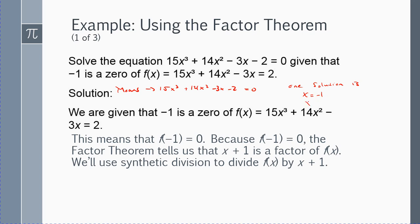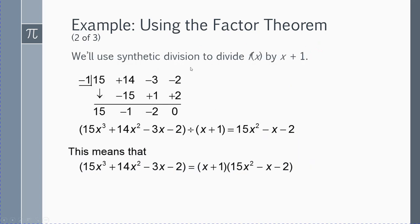So x plus 1 equals 0, which tells me that x plus 1 is a factor of f of x. I want to take 15x cubed plus 14x squared minus 3x minus 2 and divide this factor x plus 1 out, and that's going to give me a new polynomial.